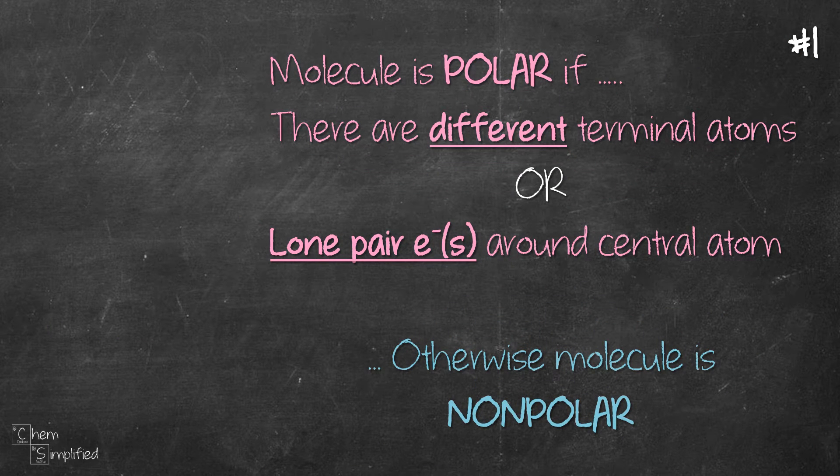Basically, we deem the molecule as polar if there are different terminal atoms or there's lone pair surrounding the central atom. Notice, if either one of the statements is true, then the molecule is polar. It doesn't have to fulfill both statements.